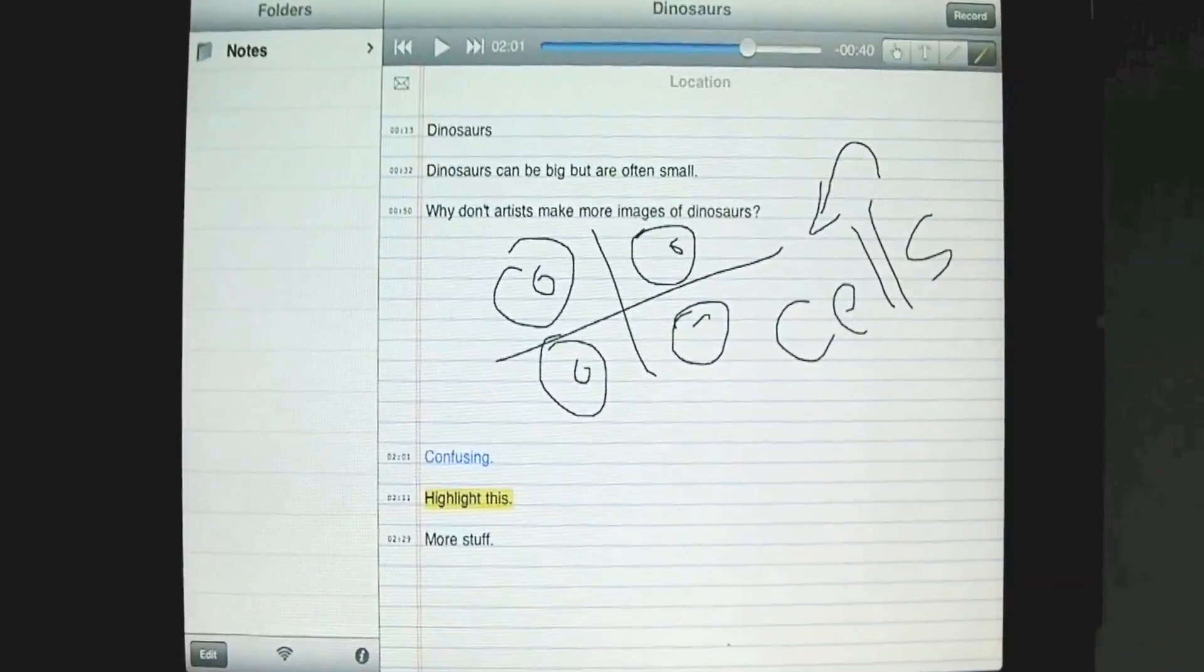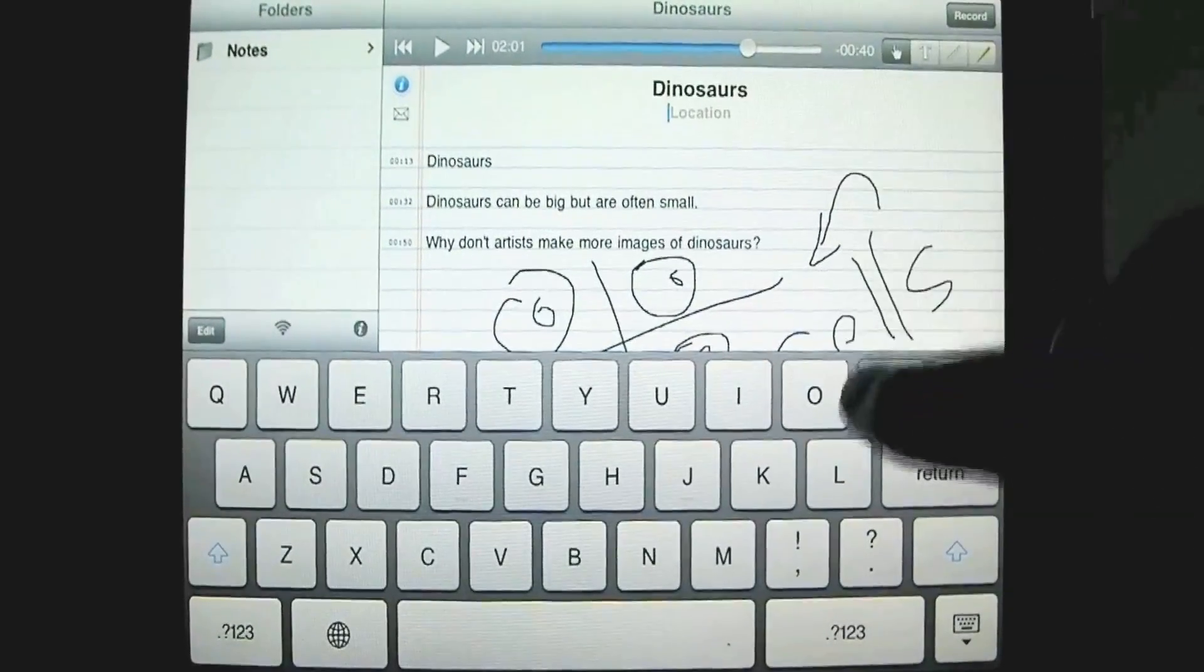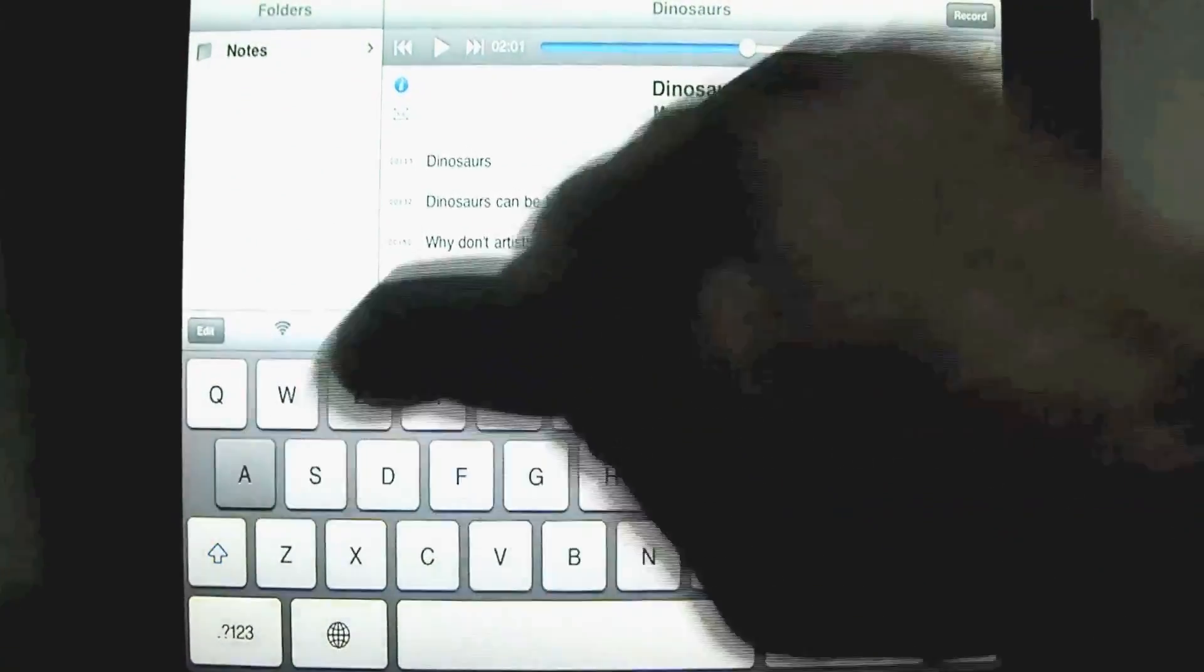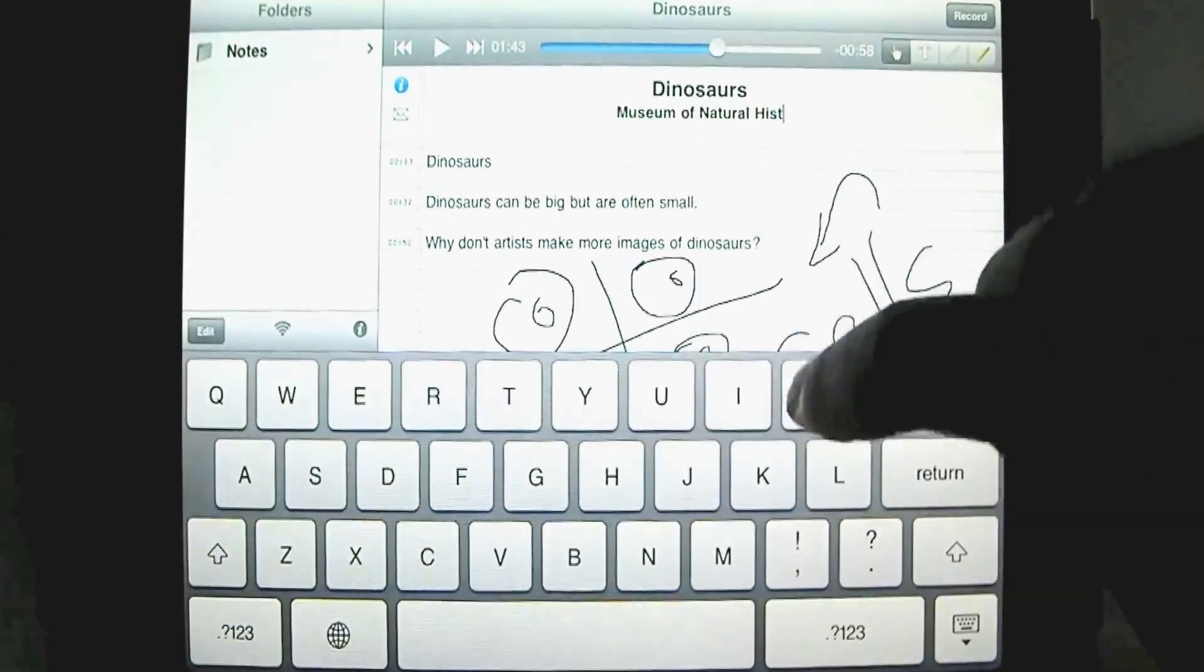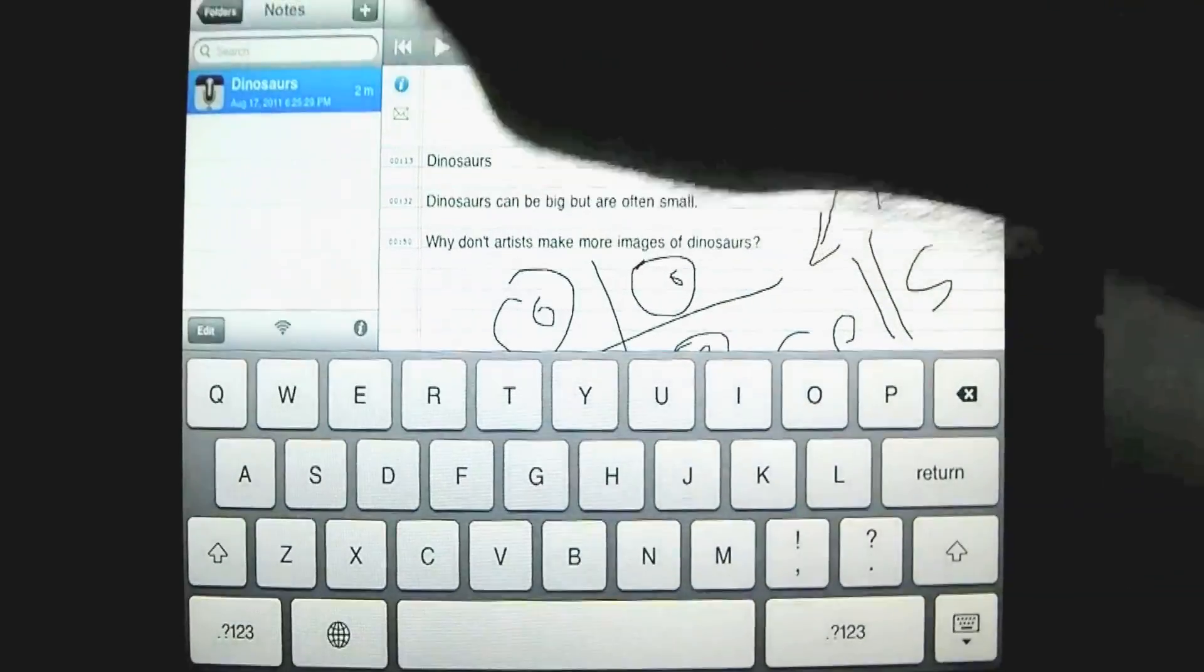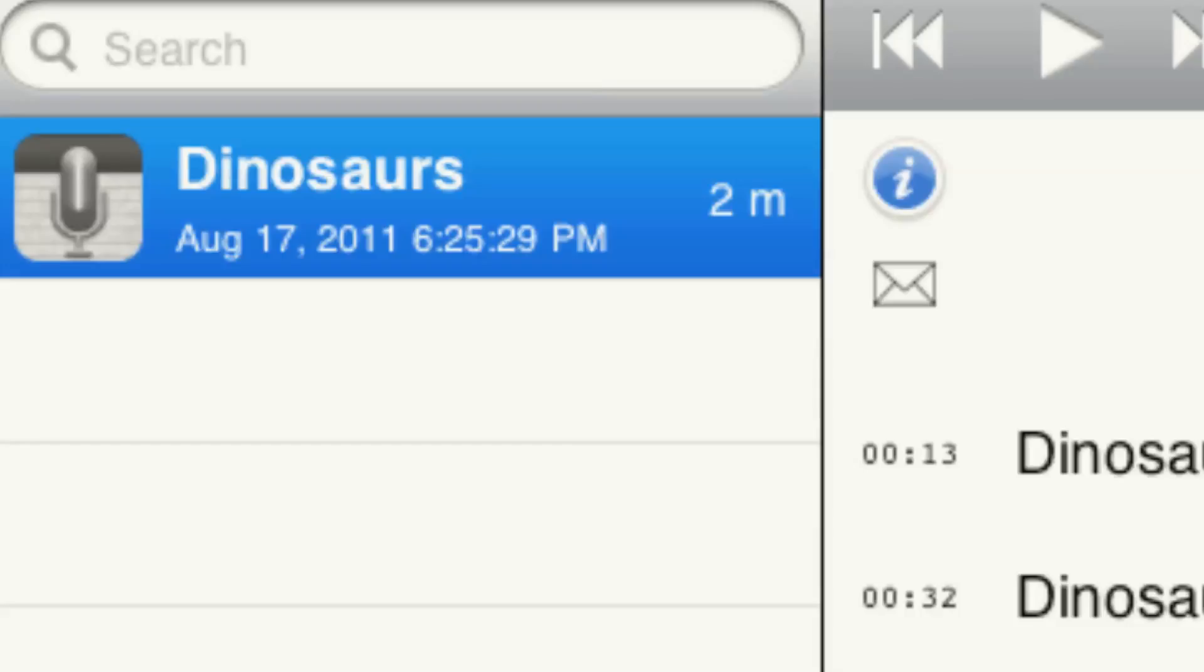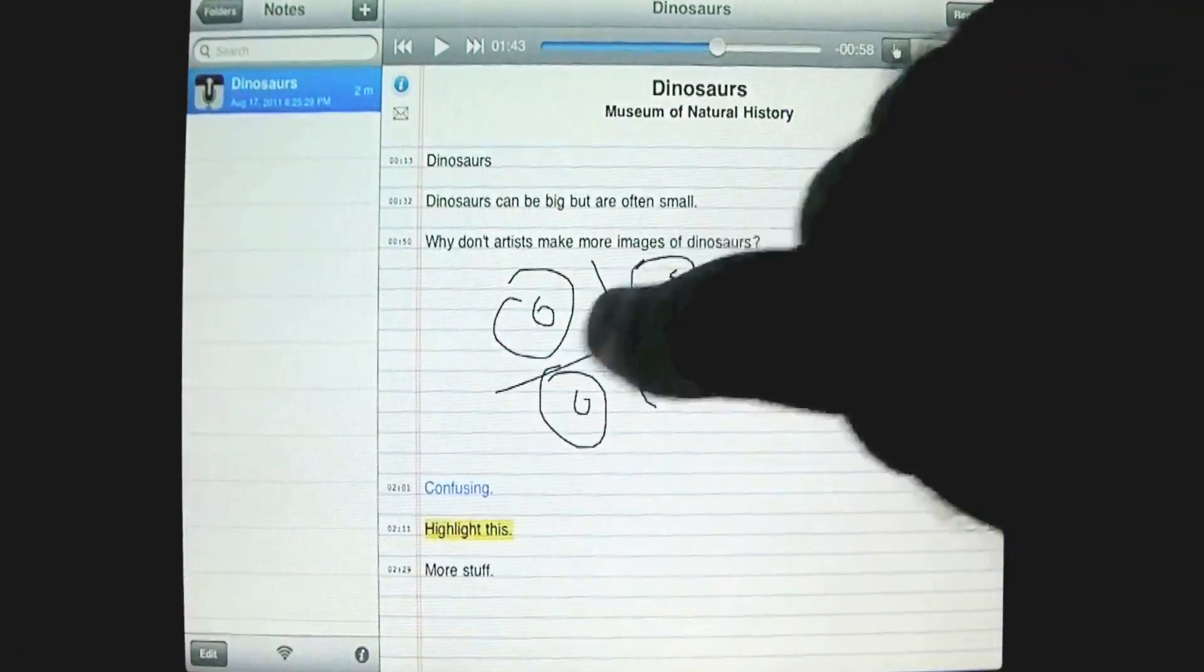Now let's talk a little bit about organization. I'm going to go over here then and access the location. And we'll say this is at the Museum of Natural History. Now I go back over here, and you'll notice under my notes folder here, click to open it. There's just one thing, and it's called dinosaurs, dated August 17, 2011, 6:25 p.m. and 29 seconds. And now I'll get rid of the keyboard so it's easier to see.